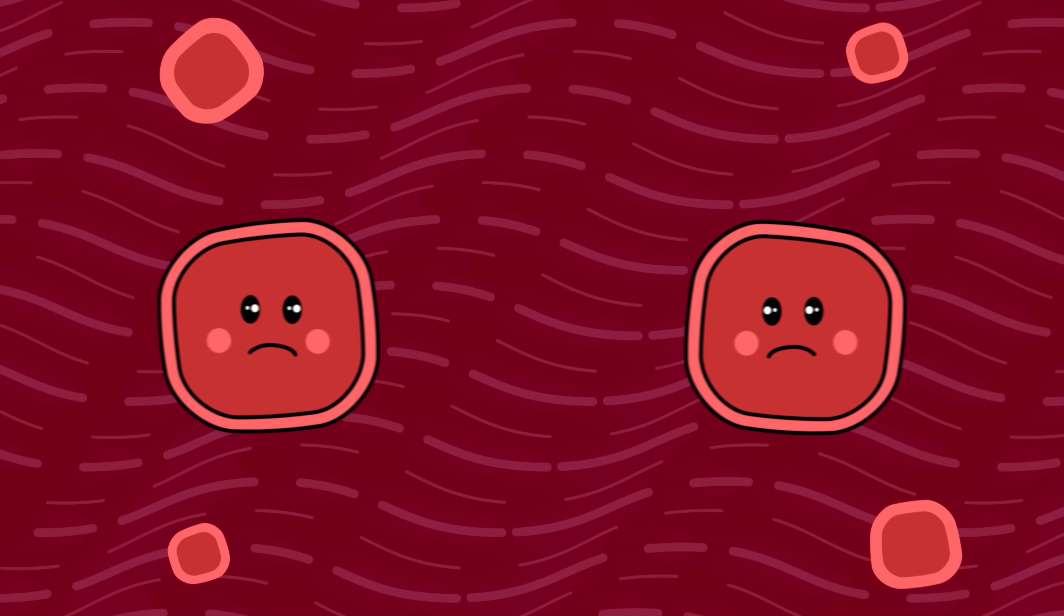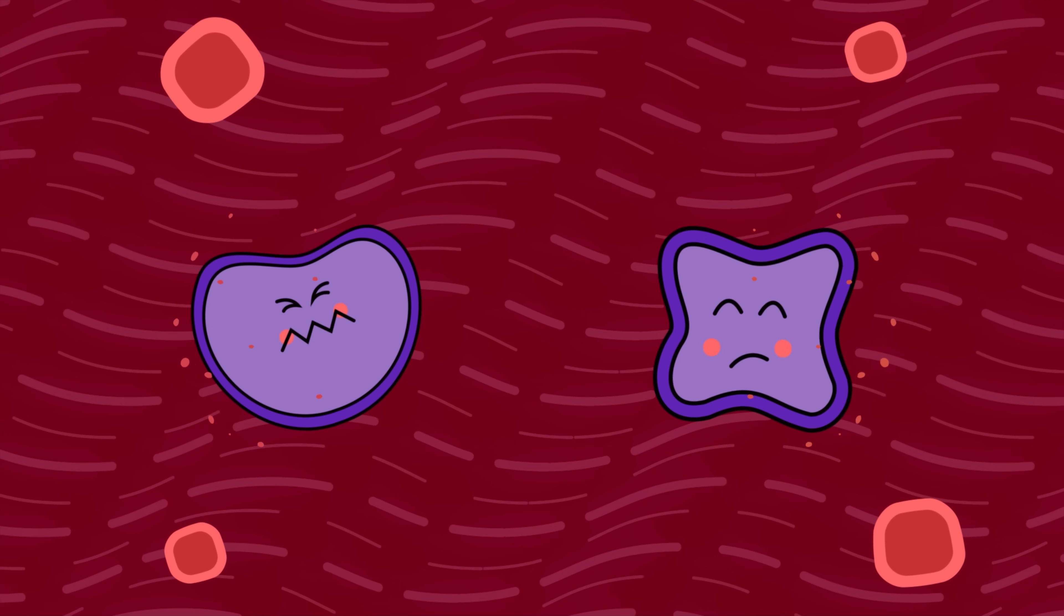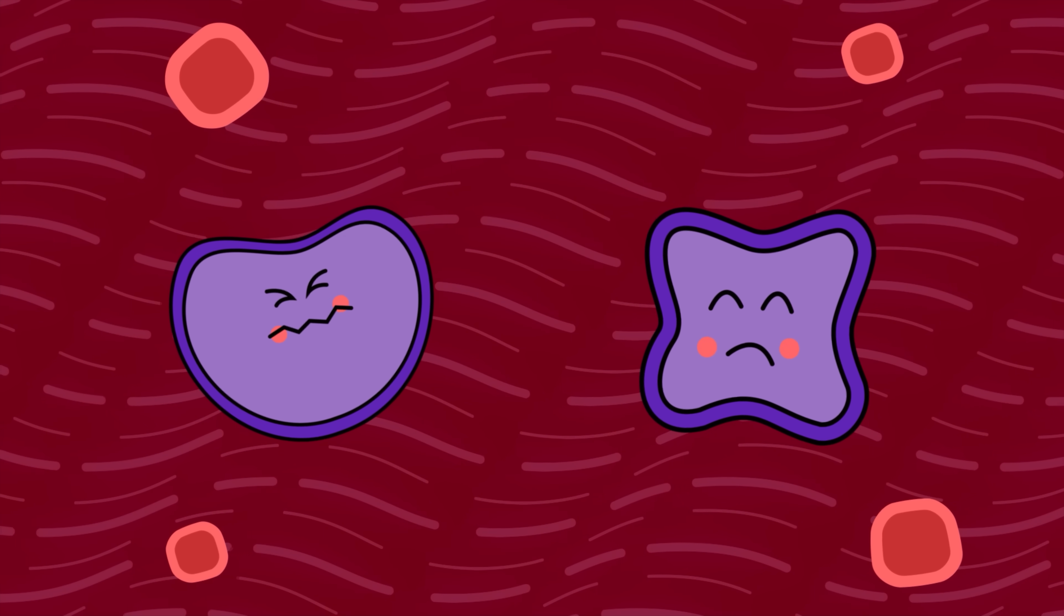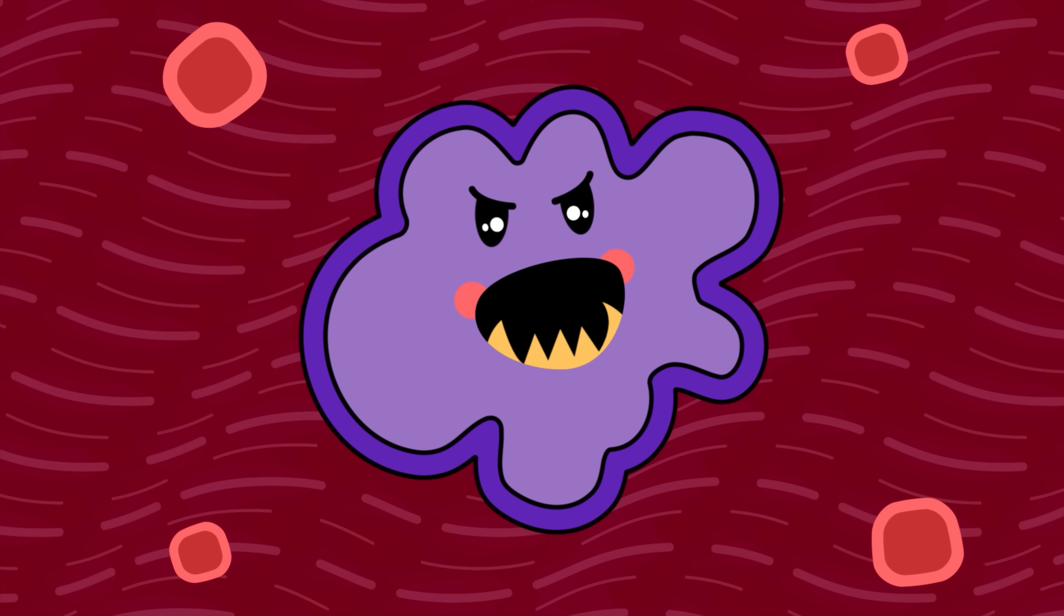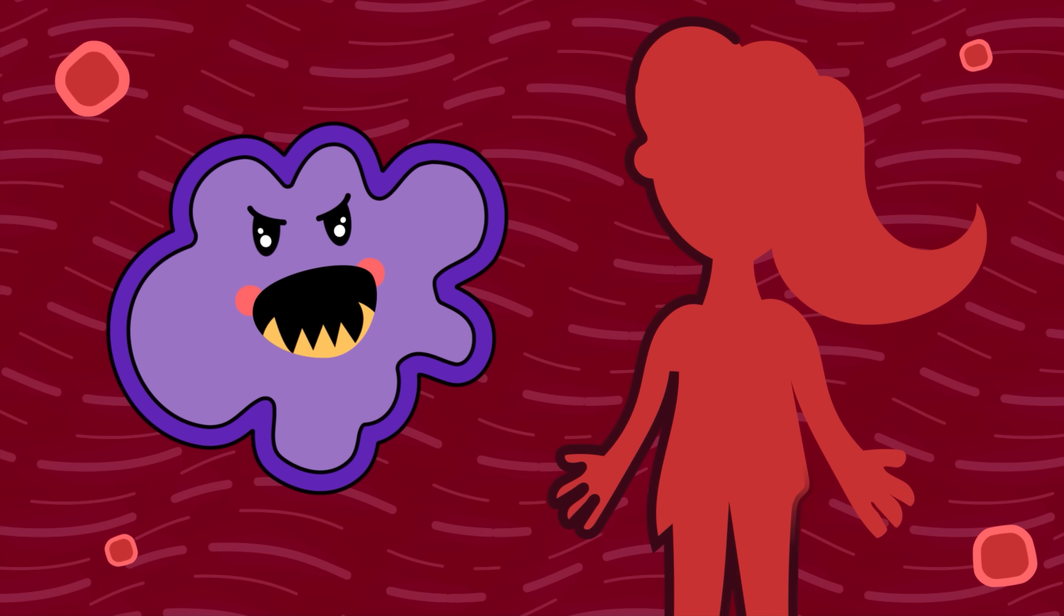This causes some cells in our body not to behave as they should. And that's why they grow randomly. Sometimes, they cluster and form little masses of cells called tumors which affect other parts of our body.